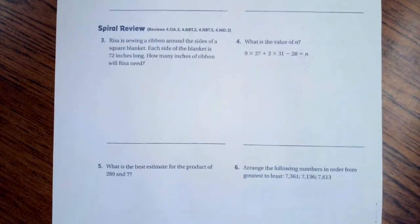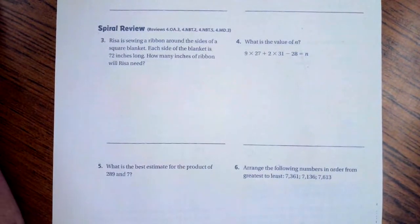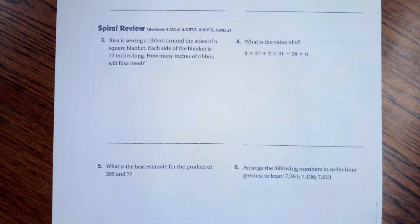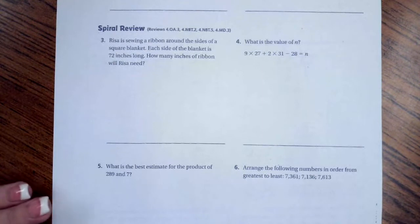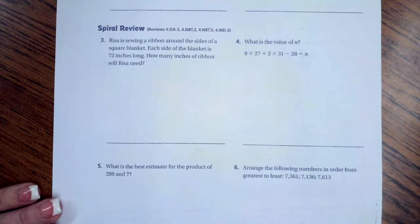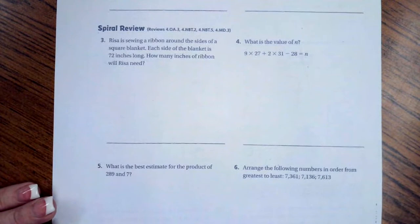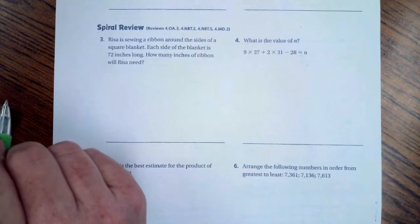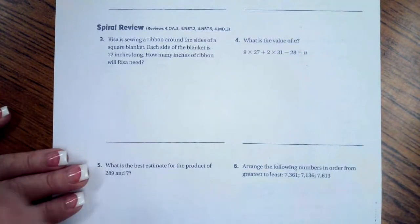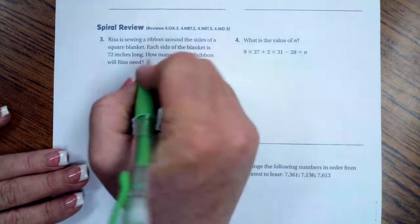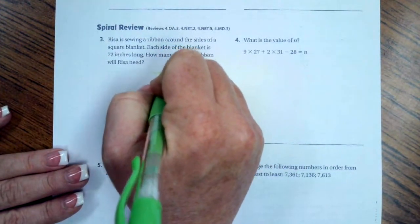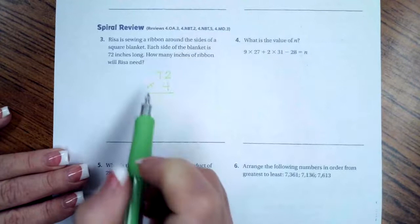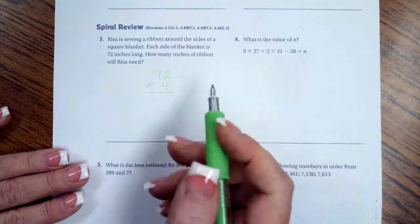We're going to flip it over to the back side where you guys are going to do the lesson check. Just like always, we're going to go down and do number 3. Number 3 says, Risa is sewing a ribbon around the sides of a square blanket. Each side of the blanket is 72 inches long. So we need to find the perimeter. How many inches of ribbon will she need? We need to find the perimeter, which means that we have two choices. We can either add 72 four times. So 72 plus 72 plus 72 plus 72, or because we're in 5th grade, we're going to do 72 times 4, because there's four sides on a square blanket.